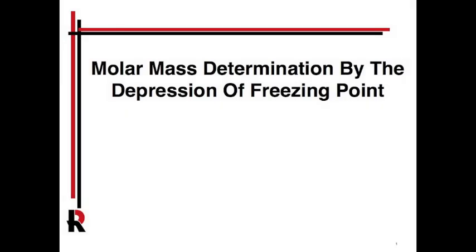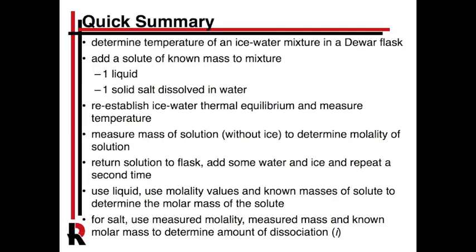This is the molar mass determination by the depression of freezing point lab from the general chemistry lab. You're going to look at the effects of putting solutes into solution and their effect on melting temperature of the water. Ultimately it's a temperature lab and a solutions lab. You'll have an ice-water mixture in an insulated dewar flask thermos, let it reach equilibrium near the freezing point of ice, then repeat the experiment with a solute added—either a liquid or a salt dissolved in solution—and see how that affects the melting temperature when it re-establishes equilibrium.